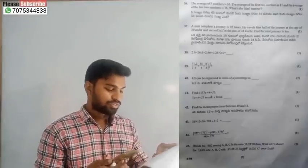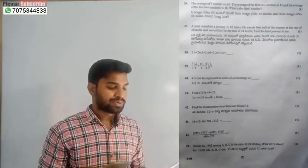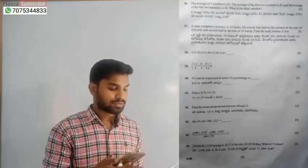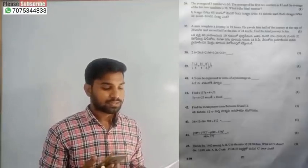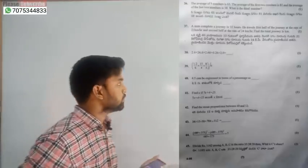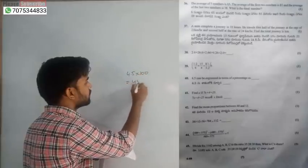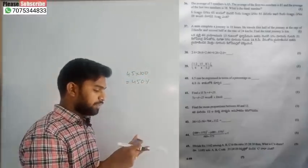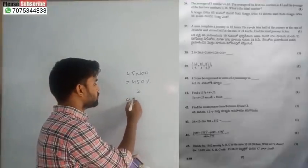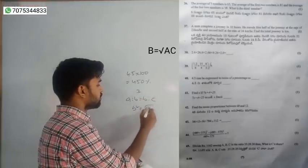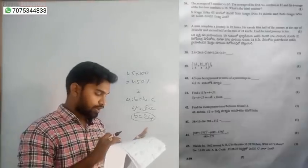Question number 37: answer is 224 km. Question number 38: answer is 34.12. Question number 39: applying the rule, the final answer is 1/3. Question number 40: 4.5 percentage converted equals 10,000 and 450 percent. Question number 41: x value is equal to 3. Question number 42: mean proportion — a is to b equals b is to c, so b squared equals square root of a times c; with a equals 48 and b equals 12, b equals 24.